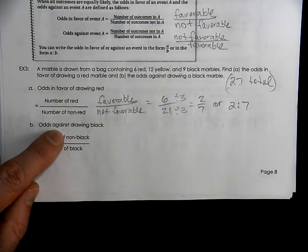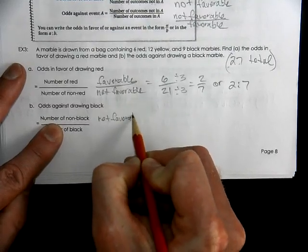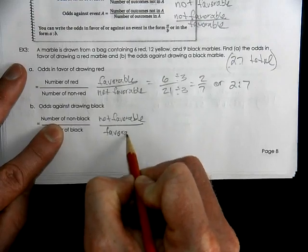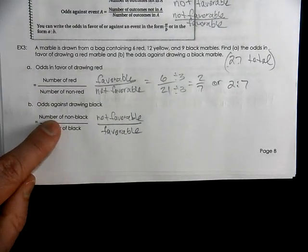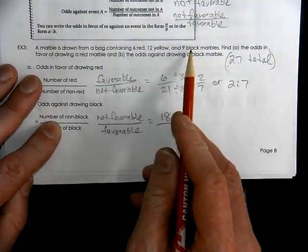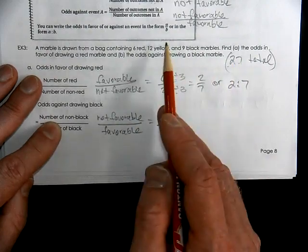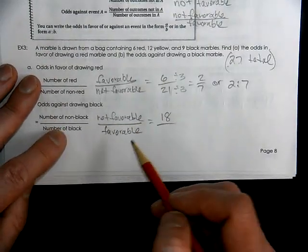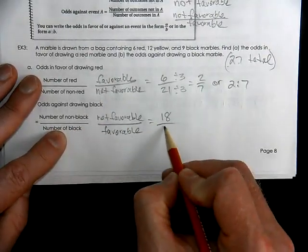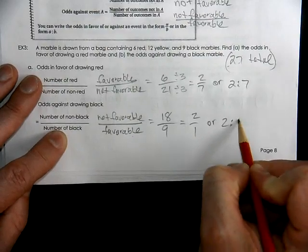Odds against. Well using our formula from above we know odds against are not favorable over favorable. So the odds against a black marble being drawn, how many are not black ones? Eighteen are not black ones. Nine of them are black ones. You have twenty-seven total. So you take away the nine from here that takes you to eighteen. That means eighteen are the other two type. And favorable means the ones that are black. We can of course reduce that to two to one or we can write that two to one.